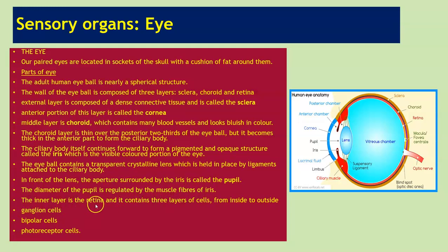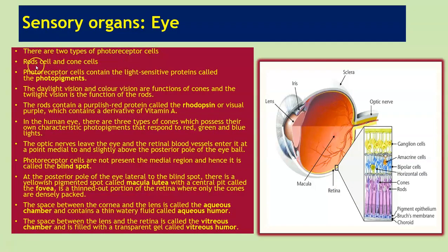The inner layer is the retina, containing three layers of cells from inside to outside: ganglion cells, bipolar cells, and photoreceptive cells. There are two types of photoreceptor cells called rod cells and cone cells. Photoreceptor cells contain the light-sensitive protein called photopigments. Daylight vision and colour vision are functions of the cones, and twilight vision is the function of the rods. The rods contain a purplish-red protein called rhodopsin (visual purple), which contains a derivative of vitamin A.